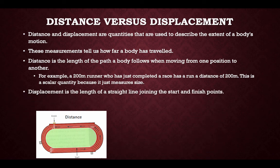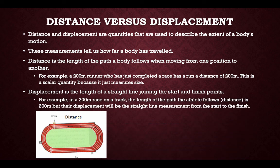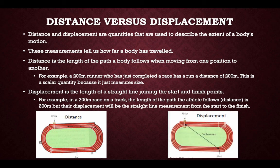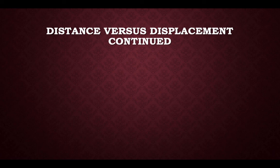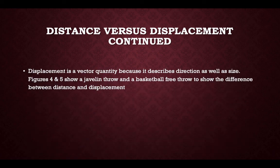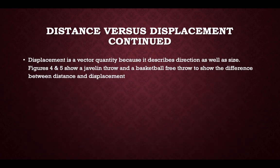Displacement is the length of a straight line joining the start to the finish point. For example, in a 200m race on a track, the length of the path the athlete follows is 200m, but their displacement will be a straight line measurement from the start to the finish. Figures 4 and 5 show a javelin thrower and a basketball free throw to illustrate the difference between distance and displacement.